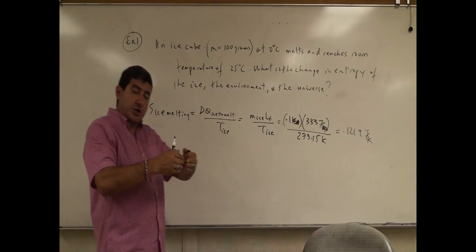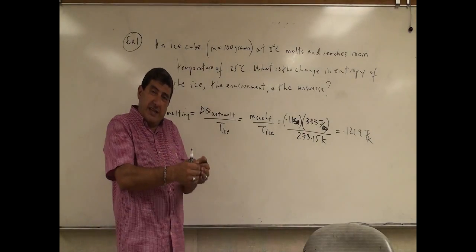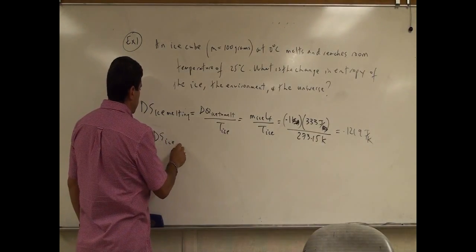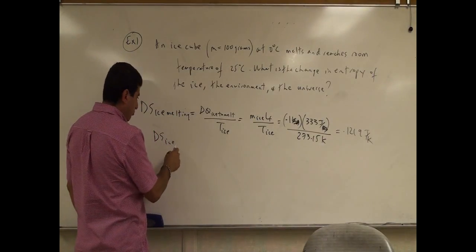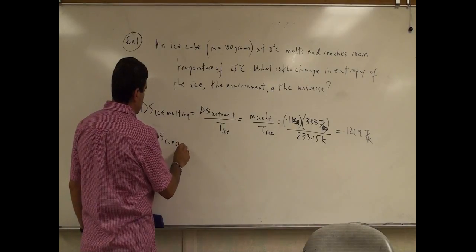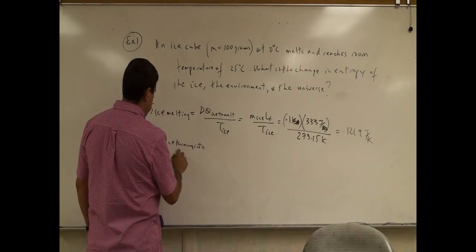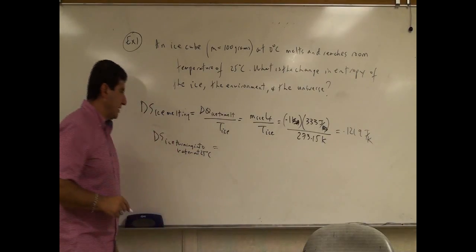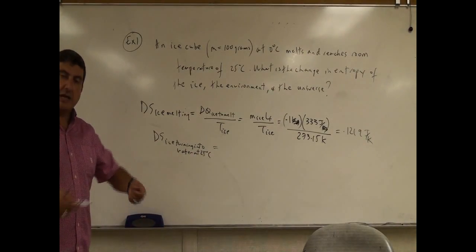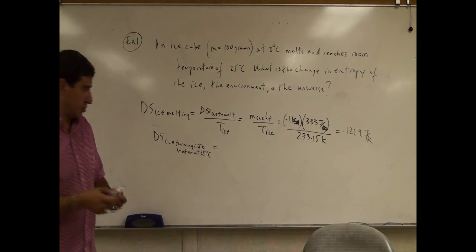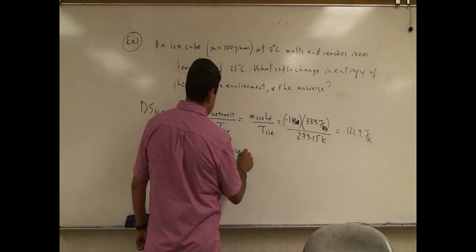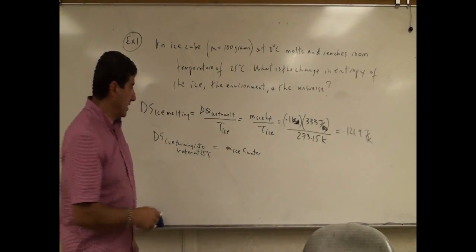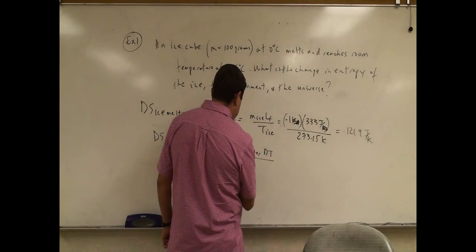Now after the ice melts, it's going to turn into water, and then its temperature is going to rise and reach room temperature. So delta S for the ice, which became water turning into water at 25 Celsius — what would that be? Well, it's going to be the mass of the ice times the specific heat of water times the change in temperature dT, divided by the temperature.